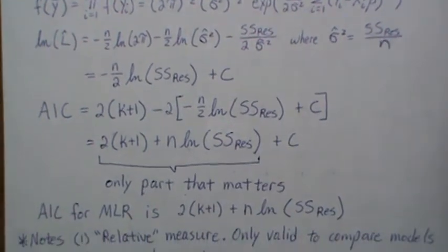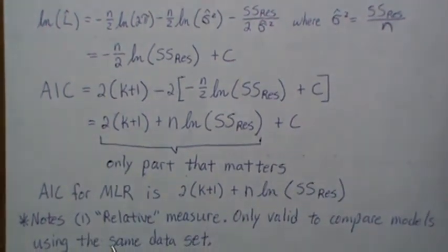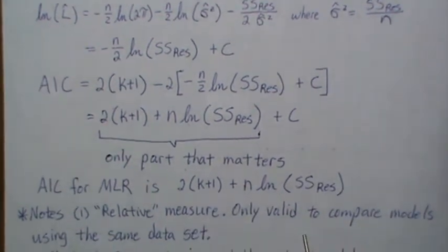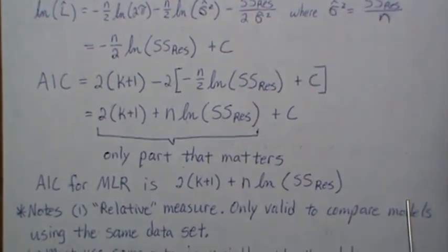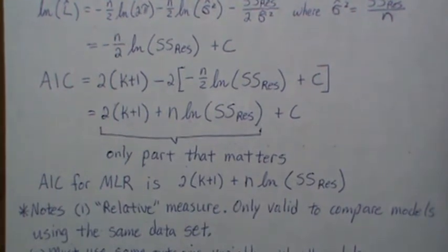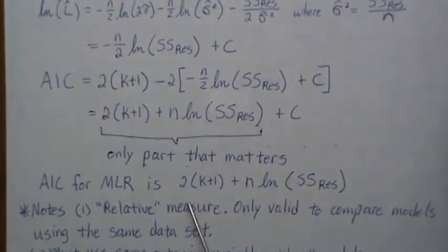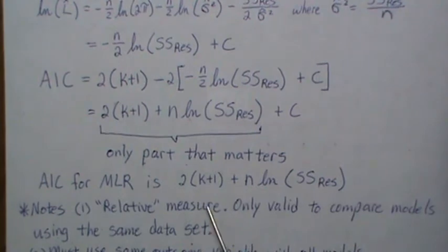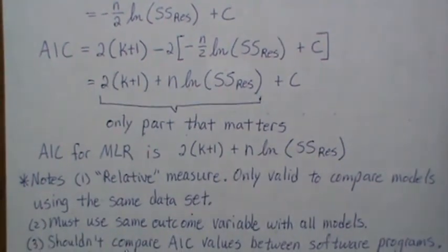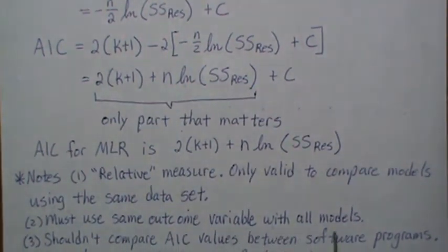There's a few notes here: it's a relative measure, meaning it's only valid to compare models using the same data set. If you have two data sets and calculate AIC, they're not 100% comparable. You have to be careful about that—it's only candidate models using the same data set. We must use the same outcome variable with all models.